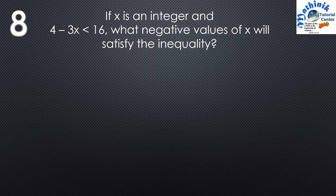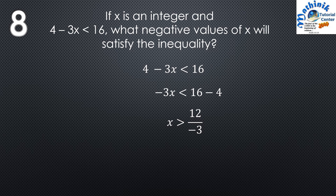Question number 8: If x is an integer and 4 minus 3x is less than 16, what negative values of x satisfy the inequality? Solving: 4 minus 3x < 16. By the addition property of inequality, negative 3x is less than 16 minus 4. Dividing both sides by negative 3 (reversing the inequality), x is greater than negative 4. The negative integers greater than negative 4 are negative 3, negative 2, and negative 1.